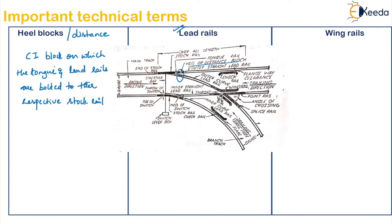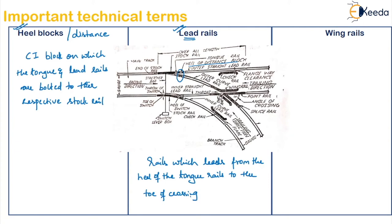Next one is the lead rail. The rail which leads the track from the heel of the tongue rail to the toe of crossing is called the lead rail. Next is the wing rail — the bent up length of rail used in front of the nose of crossing, which helps in channelizing the train wheels in their proper route, is called the wing rail.